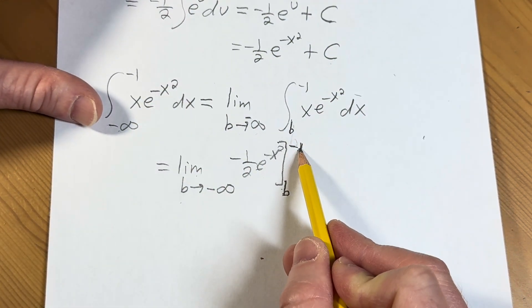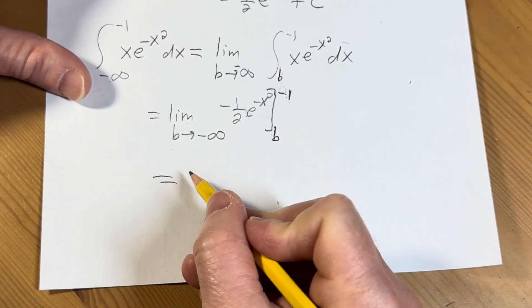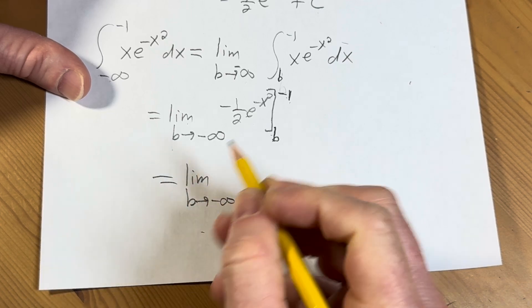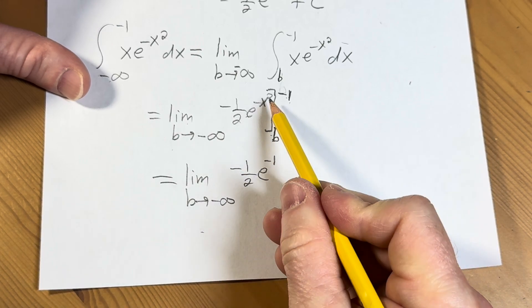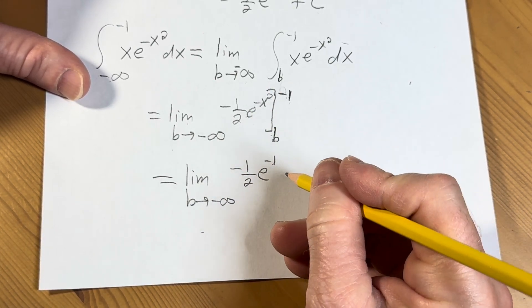Here, this says we first plug in the negative 1. So this is equal to the limit as b approaches negative infinity. Plugging in the negative 1, we have negative 1 half e to the negative 1. Negative 1 squared is 1 and we already have a negative. That's how we get the negative here.